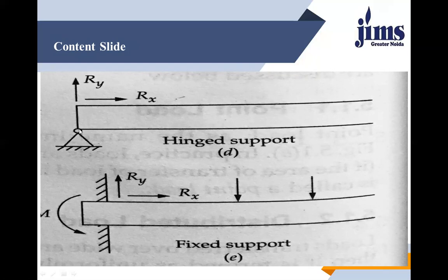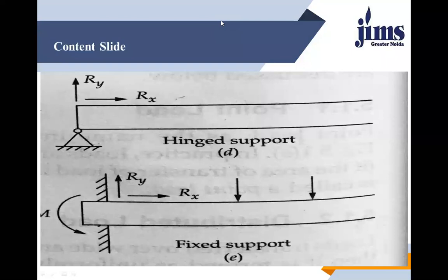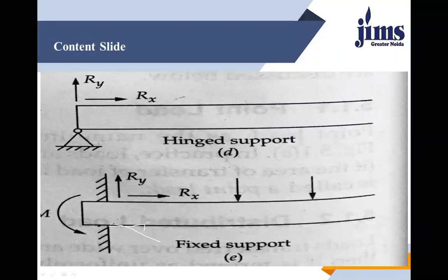The next type is fixed support. In a fixed support, there are three kinds of reactions: horizontal, vertical, and moment. Due to all three reactions, there is no displacement in any direction and no slope at the connection. So all three reactions are non-zero, and all deflections and slope are zero.